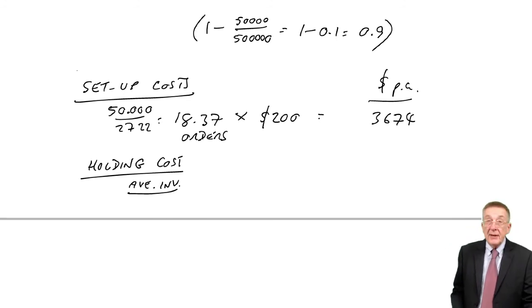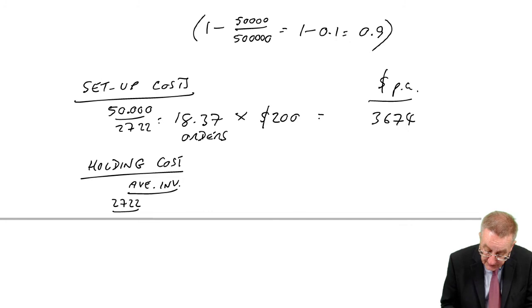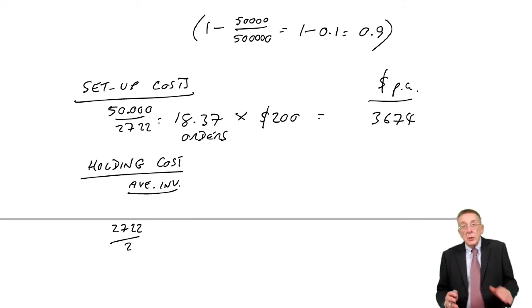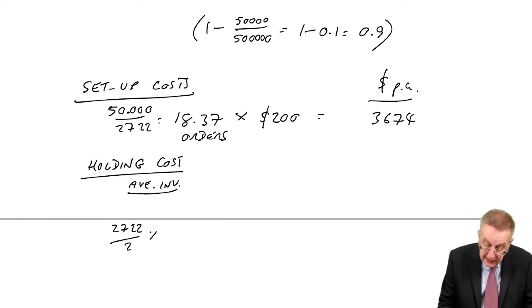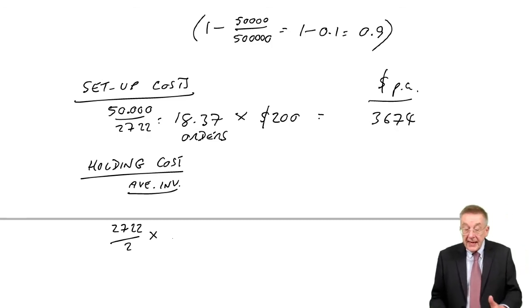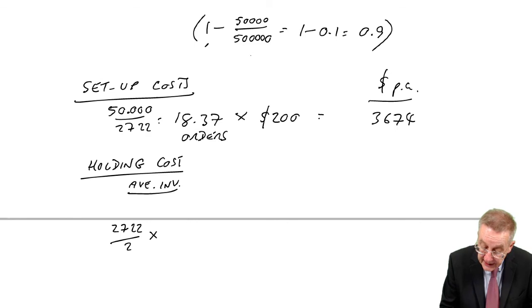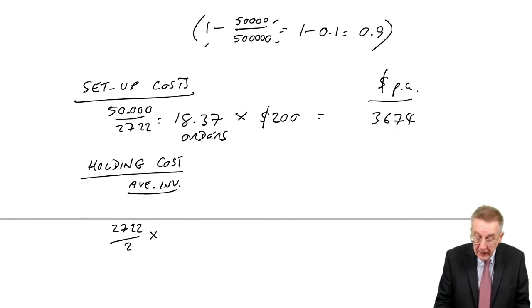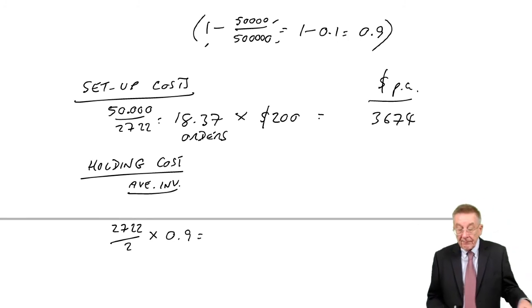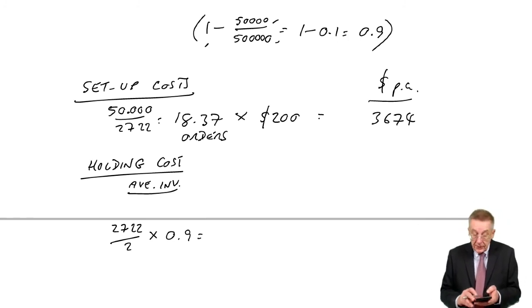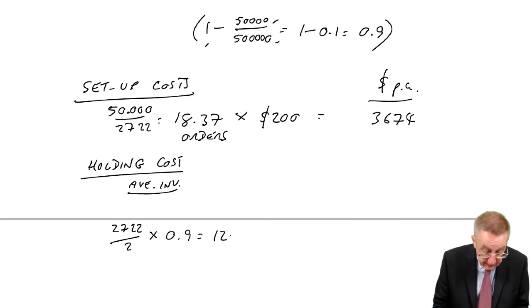I've printed the formula for it, just above the example. It's the order quantity, 2722 over 2. But to adjust for this delay, we multiply by 1 minus d over r, and that was 1 minus d over r, 0.9. So the average inventory, 2722 divided by 2 times 0.9, I get 1224.9.